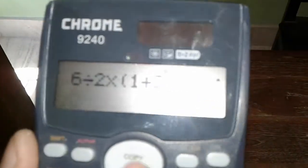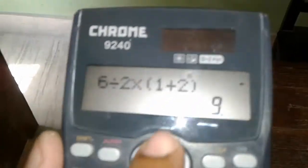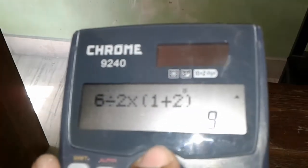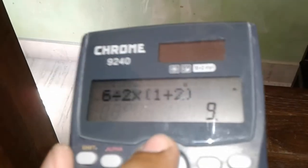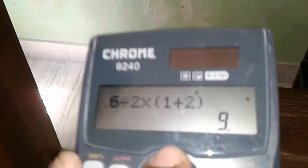Now you look at this scientific calculator. Here we have introduced 6 divided 2 along with the multiplication sign into 1 plus 2. We get the result 9.